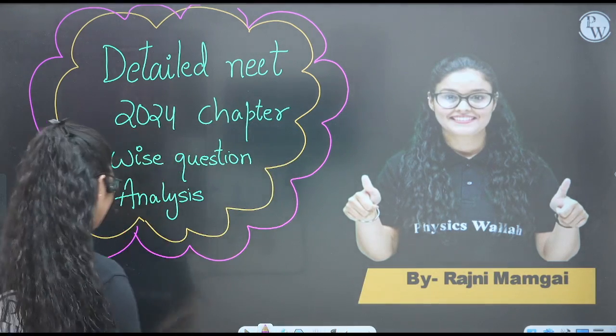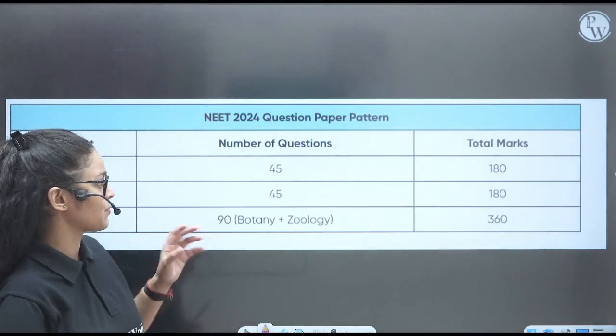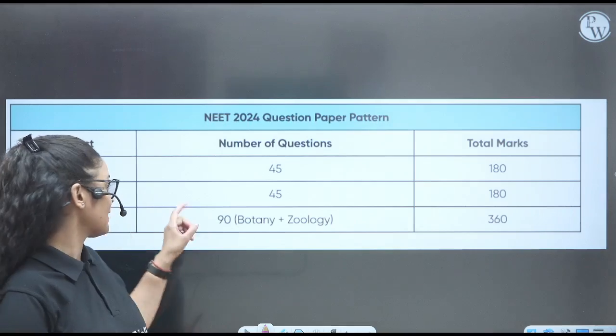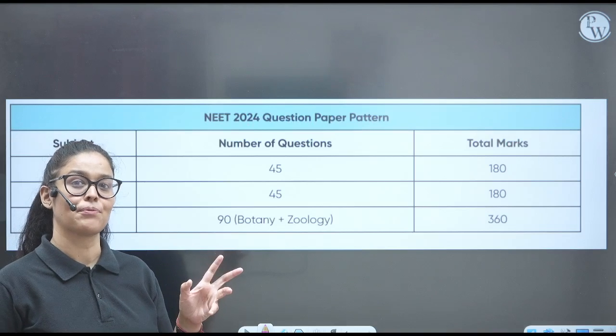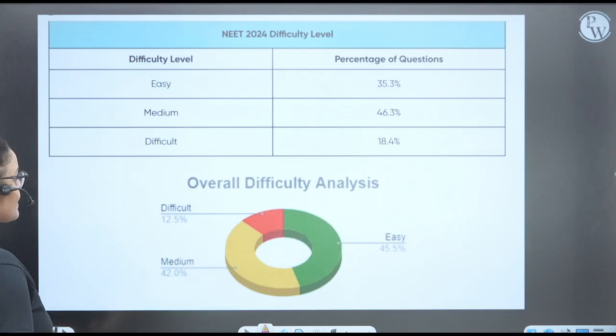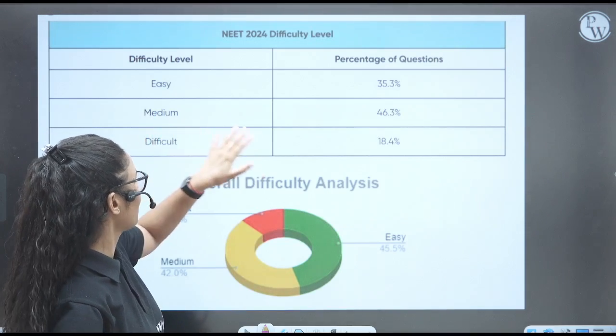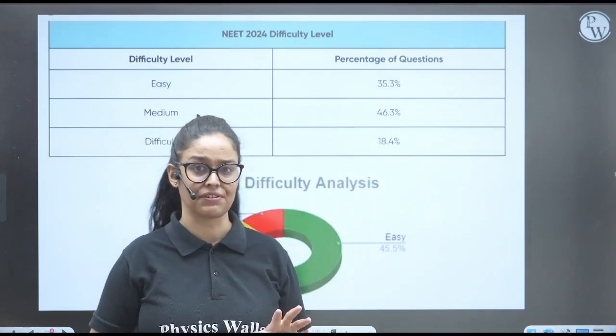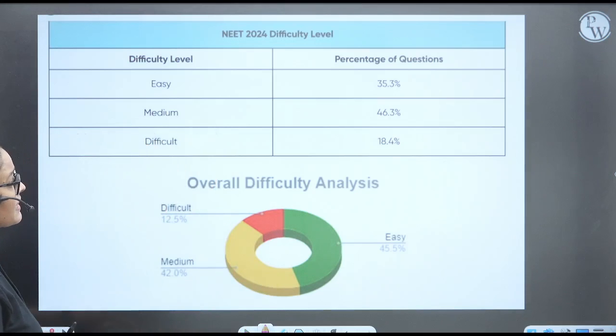So let's move ahead towards the analysis. We know that from Physics, we have 45 questions. From Chemistry, we have 45, and from Biology, we have 90 questions - 45 from Botany, 45 from Zoology. So total 720 marks. Now we will see difficulty level: 35% easy, 46% medium, and 18% difficult. So this was the difficulty percentage of the paper. You can see over here, right?